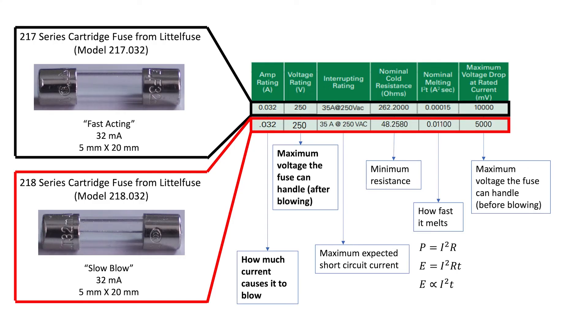This was the line from the fast blowing fuse, or the fast acting fuse. What do these parameters look like for a slow blow fuse?